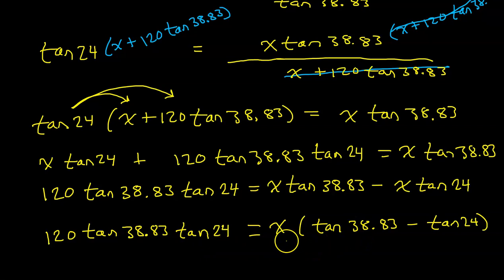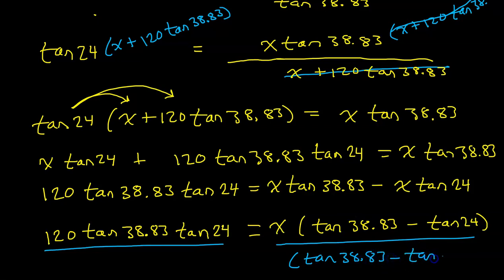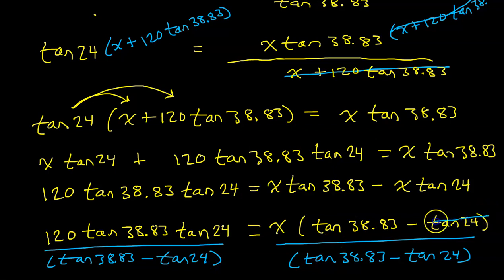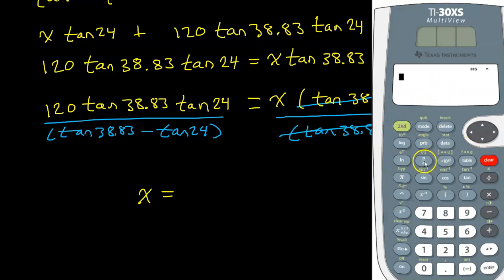Now I can factor out a common factor of X. Bringing X outside of parentheses will leave me with tangent 38.83 minus tangent 24. We can now get X by itself by dividing both sides of the equation by what we see in parentheses — tangent 38.83 minus tangent 24 — which is going to get X by itself, because these will cancel each other out leaving X alone. This entire expression is something we can simply put in our calculator.